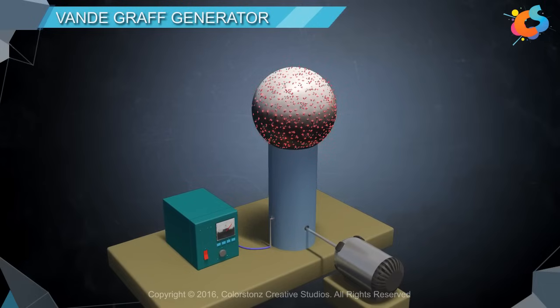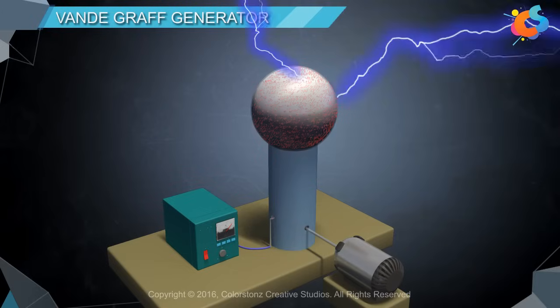It becomes difficult for the surface to hold more and more charges due to the force of repulsion between like charges on the dome. When the potential of the spherical shell exceeds the breakdown value of air, air around the sphere gets ionized and leakage of charge takes place from the sphere.